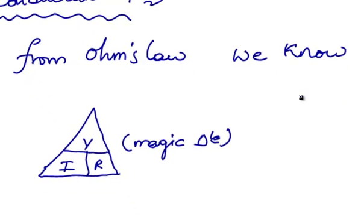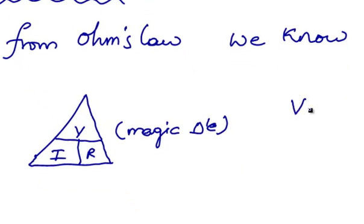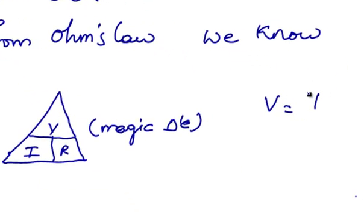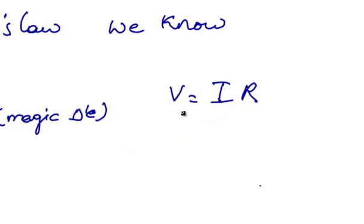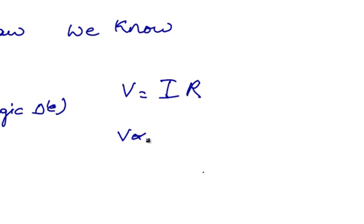From Ohm's law we know that V is equal to I into R, that is the potential difference across a conductor is directly proportional to the current flowing through the conductor. So V proportional to I implies V is equal to I into R.